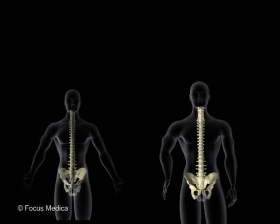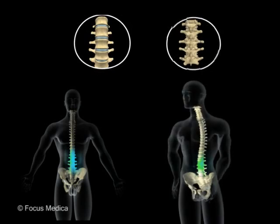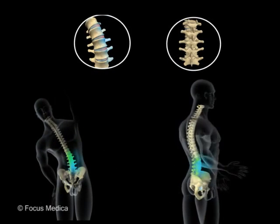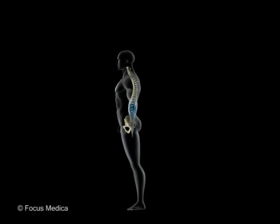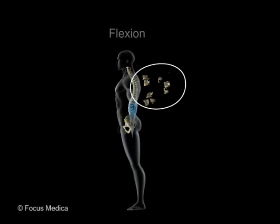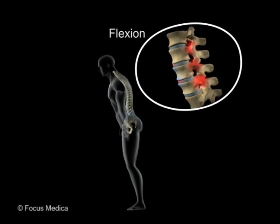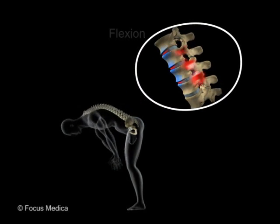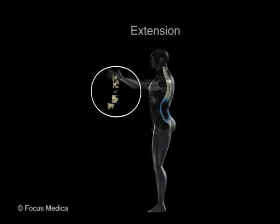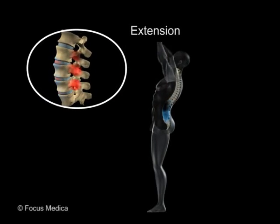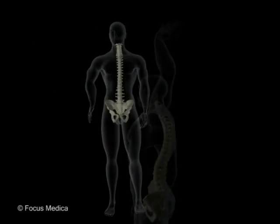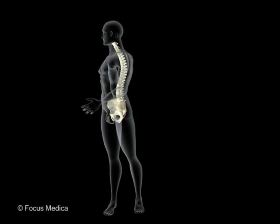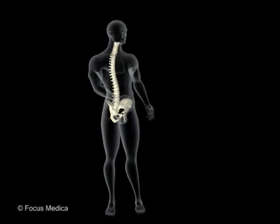The vertebral column normally has a small movement at each joint. Cumulated, this results in gross movements of flexion, extension, lateral bending, and a certain degree of rotation.